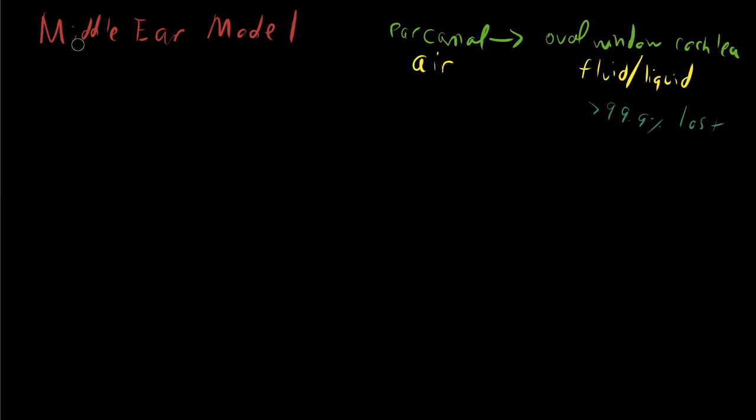The middle ear does precisely that. It provides an impedance matching circuit so that the impedance of the air and the impedance of the liquid are better managed, such that you have something that's much better than 99.9 percent energy loss.